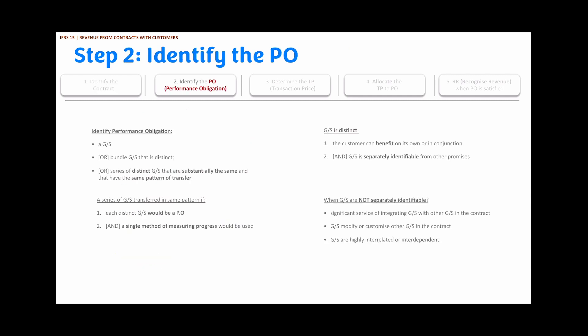The standard also provides guidelines on what to do when a contract is modified. The next step is to identify the performance obligation. A performance obligation could be a good or service, or a bundle of goods or services that is distinct. It could also be a series of distinct goods or services that are substantially the same and have the same pattern of transfer.